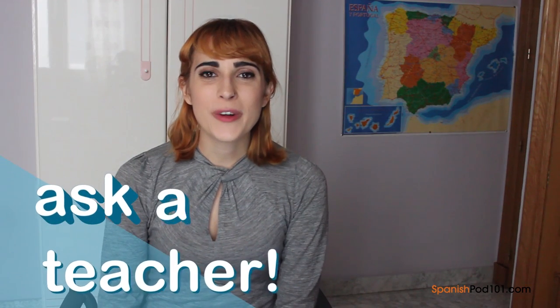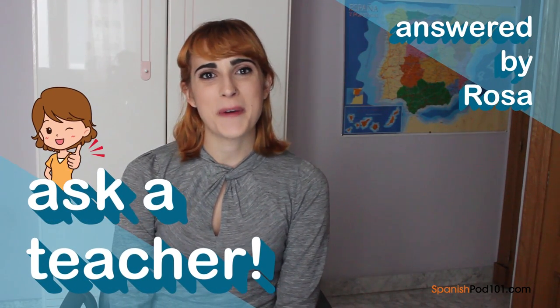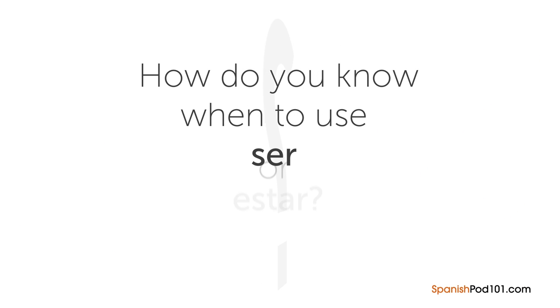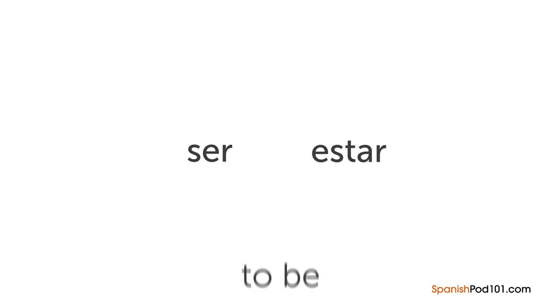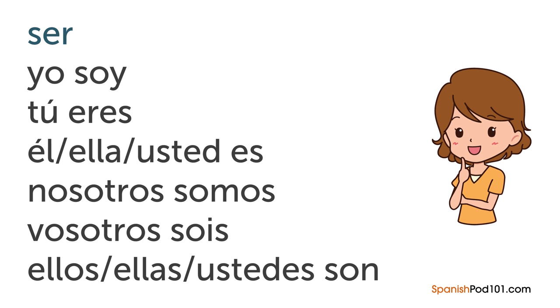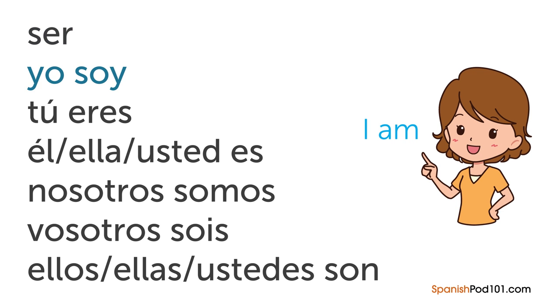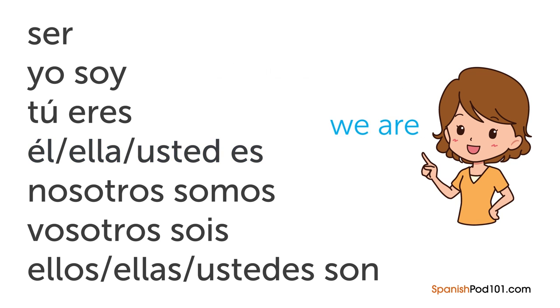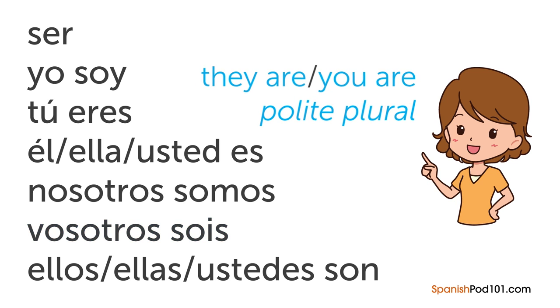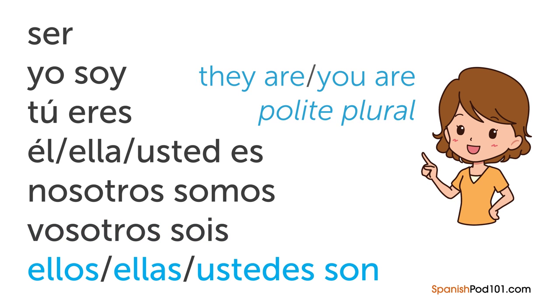Hi everybody, Rosa here. Welcome to Ask a Teacher, where I'll answer some of your most common Spanish questions. The question for this lesson is: how do you know when to use SER or ESTAR? This can be confusing, especially for native English speakers, because both SER and ESTAR mean 'to be.' The forms of SER are: yo soy, tú eres, él/ella/usted es, nosotros somos, vosotros sois, ellos/ellas/ustedes son. The forms of ESTAR are: yo estoy, tú estás, él/ella/usted está, nosotros estamos, vosotros estáis, ellos/ellas/ustedes están.